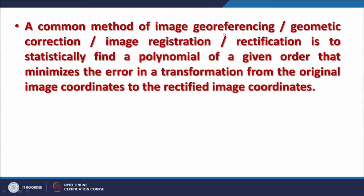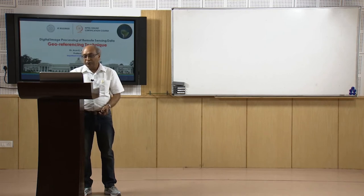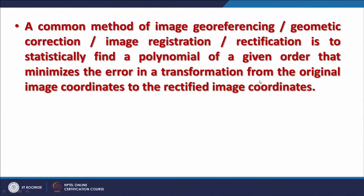This important method is also called image georeferencing, and in the literature you may also find the terms geometric correction, image registration, or image rectification. Statistically, what it does is find a polynomial of a given order — decided depending on the distortions present in the image — that minimizes the errors in the transformation from original image coordinates to rectified image coordinates.